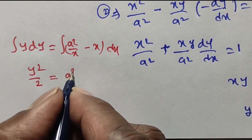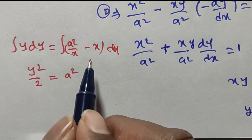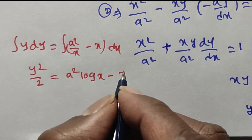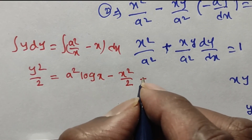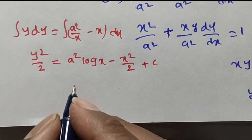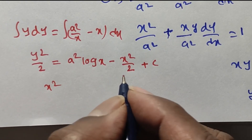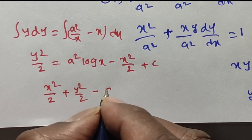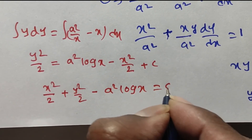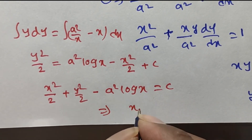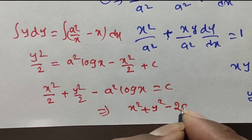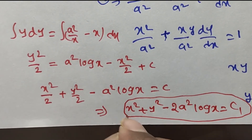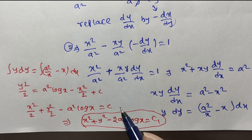Integrating both sides: y²/2 = a² · log x − x²/2 + C, since a² is a constant and ∫(1/x)dx = log x. Rearranging all terms to one side: x²/2 + y²/2 − a² log x = C. Multiplying through by 2: x² + y² − 2a² log x = C₁, where C₁ is an arbitrary constant.